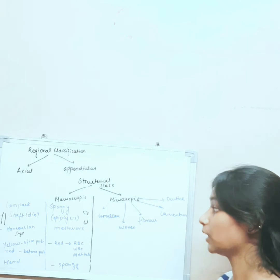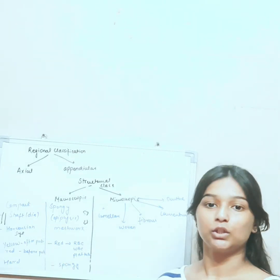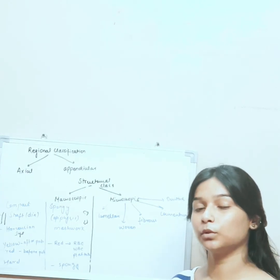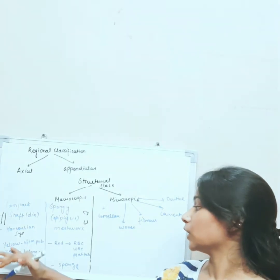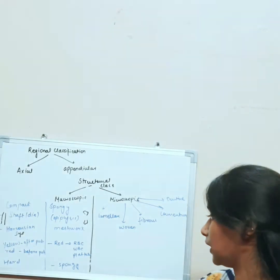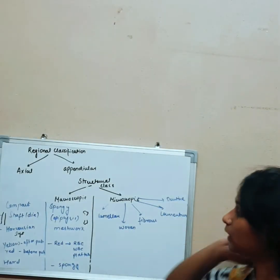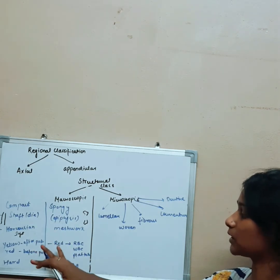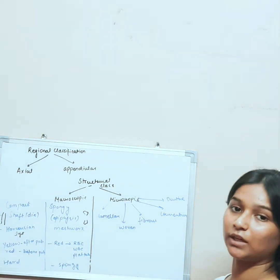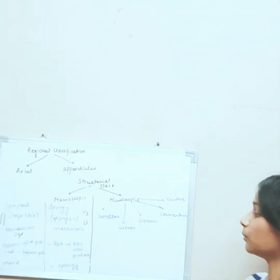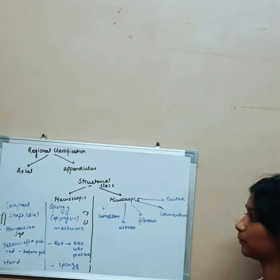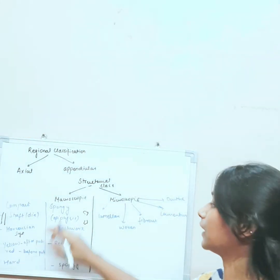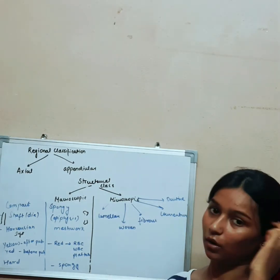Compact bones are arranged according to the Haversian system, while spongy bones don't have any particular system — they are arranged in a meshwork. Before puberty, compact bones contain red bone marrow, but after puberty they become yellow; yellow bone marrow stores fat. In spongy bones, red bone marrow is present because it produces red blood cells, white blood cells, and platelets. Compact bones are hard like ivory, while spongy bones are soft and spongy in nature.